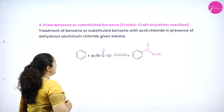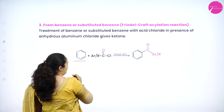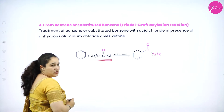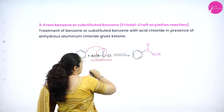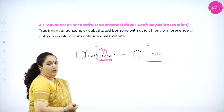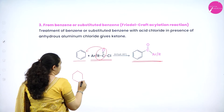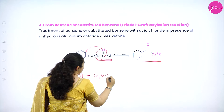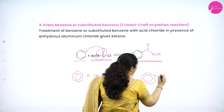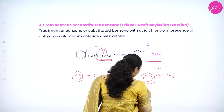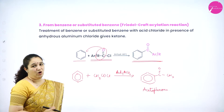The next method is from benzene or substituted benzene — that is Friedel-Crafts acylation reaction. We take benzene, treat it with acyl chloride in the presence of anhydrous aluminum chloride. The COR group gets substituted onto the ring. For example, benzene with CH3COCl (acetyl chloride) and anhydrous AlCl3 gives C6H5–C(=O)–CH3, which is acetophenone. This is the third method of preparation of ketones.